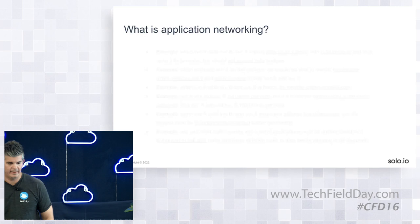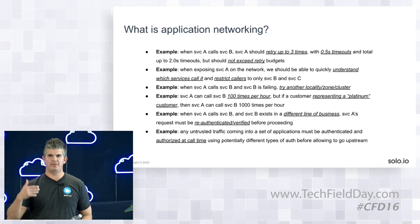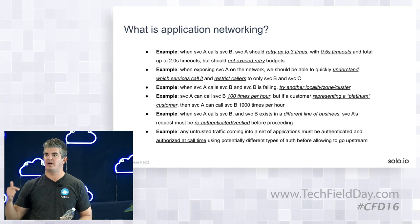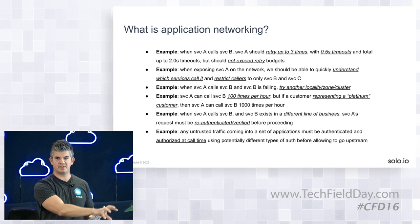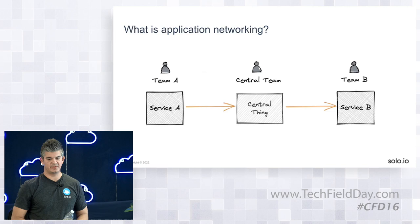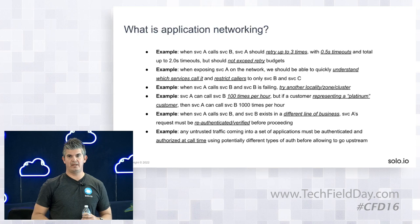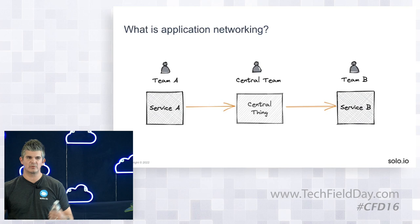Further refining what application networking is — things like how many retries can a service call when things fail? You can call this service, but only when the originator lives in this availability zone and only at this time of day. In the past, we would try to implement these things by standing up some team, and we saw things like the enterprise service bus spring up — that's what we tried to use to solve a lot of these integration and networking challenges.